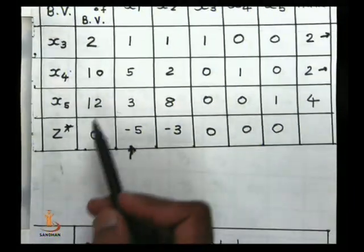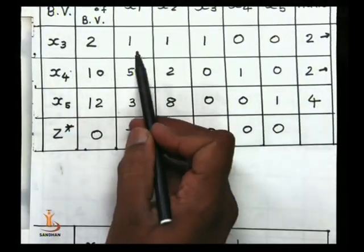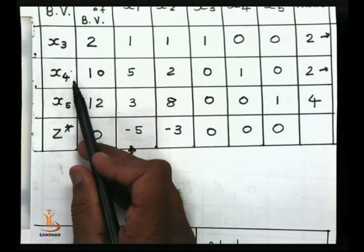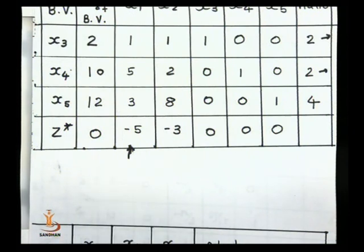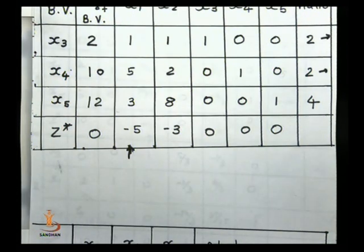Then we remove x4 and enter x1 into the basis. In the next step, we can apply the simplex algorithm and solve the problem. The Charnes method helps us decide which variable to remove from the basis when there is a tie.